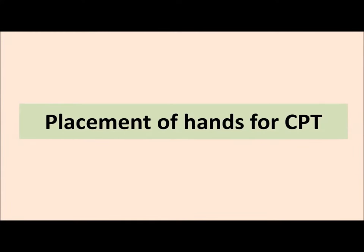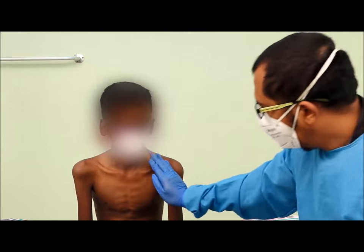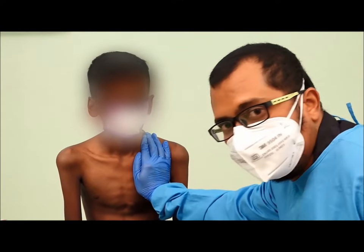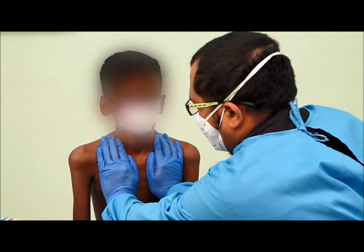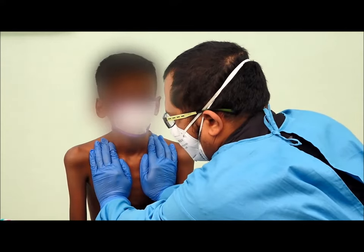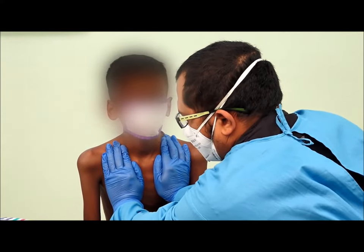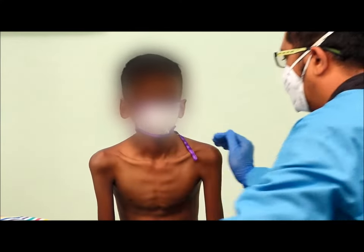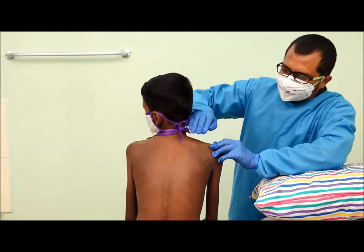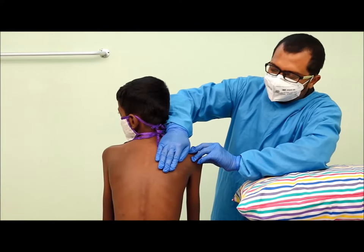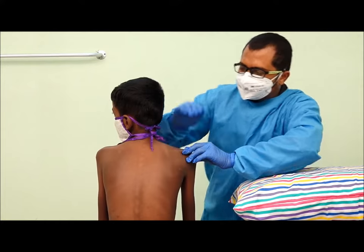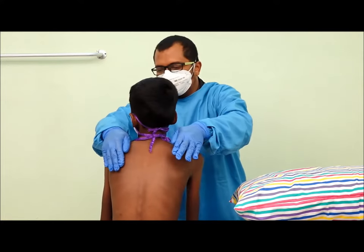Let me show you placement of hands without clothing, just for you to understand which part of the lung to be clapped. Upper lobe, front, left and right, below the collarbone and above the nipple. Upper lobe, back, right and left, over the shoulders.